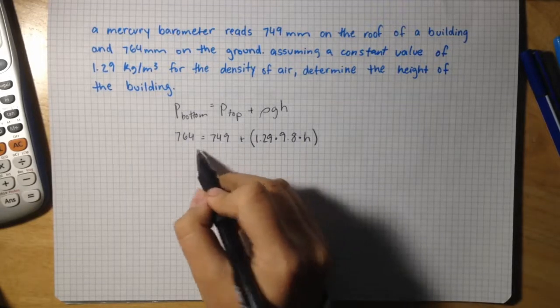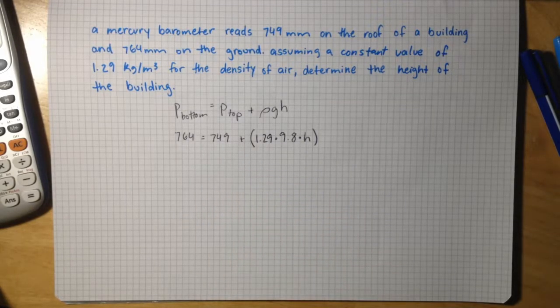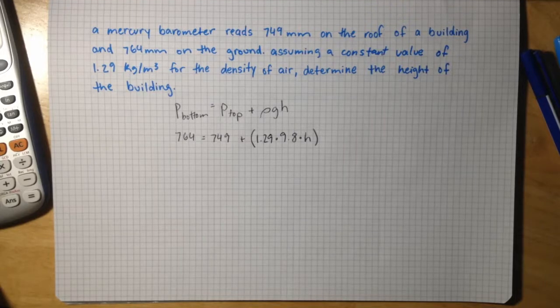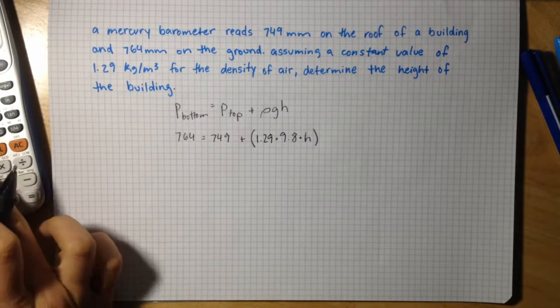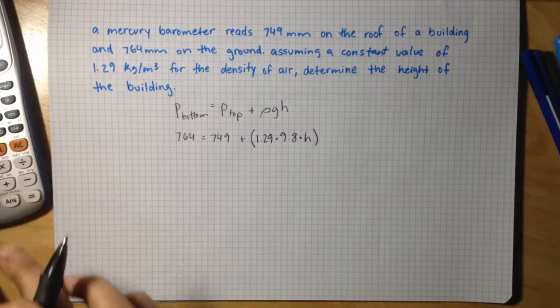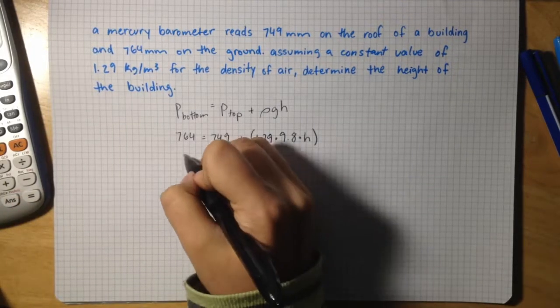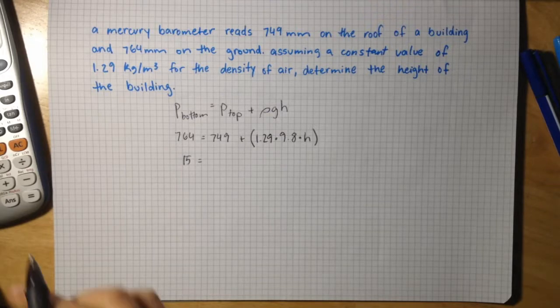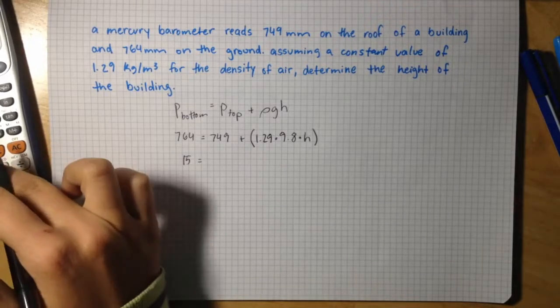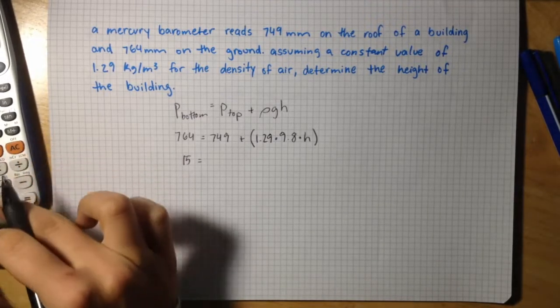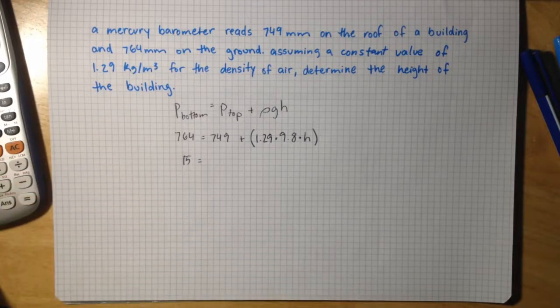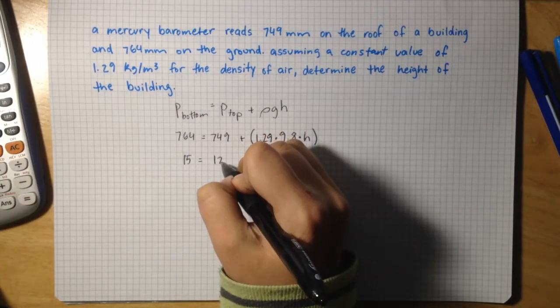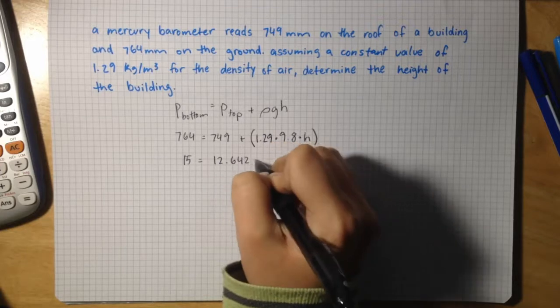Subtract this over to the other side. 764 minus 749, 15 equals 1.29 times 9.8, which gives us 12.642H.